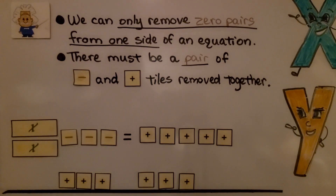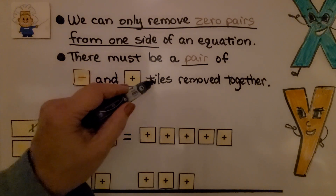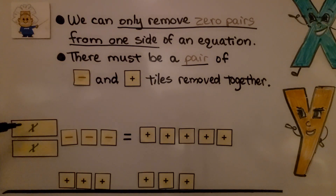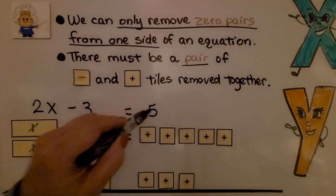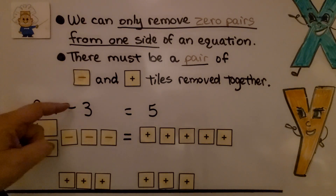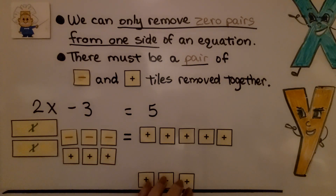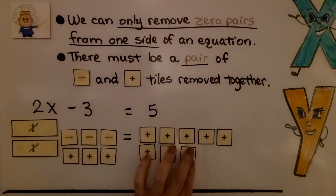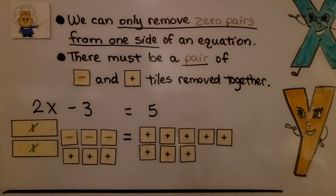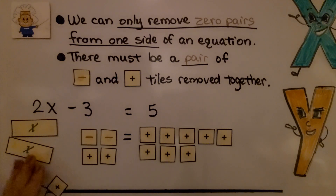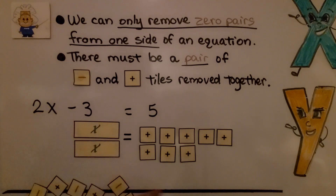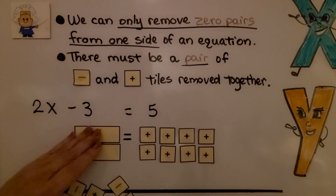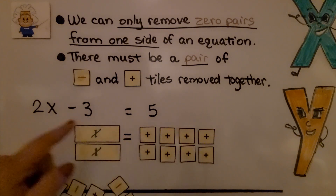We can only remove zero pairs from one side of an equation, and there must be a pair of a negative and a positive for tiles to be removed together. For example, if we have 2x minus 3 is equal to 5, we add plus 3 to each side of the equal sign to keep it balanced. This creates three zero pairs we can remove, leaving us with 2x is equal to 8. That means each x must be 4, so x is equal to 4.